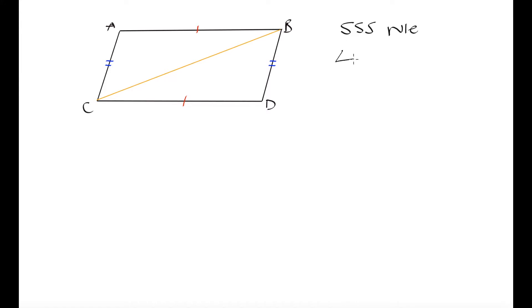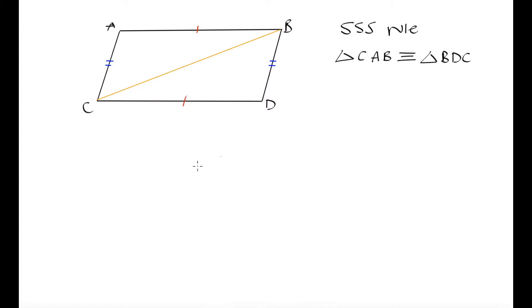The side-side-side rule states that when we have three corresponding sides that are equal between two triangles, the triangles are congruent. That means triangle CAB is congruent to triangle BDC. We know that congruent triangles have corresponding side lengths equal and corresponding angles equal. We've already established the corresponding side lengths; what we haven't noted yet is that corresponding angles must also be equal.